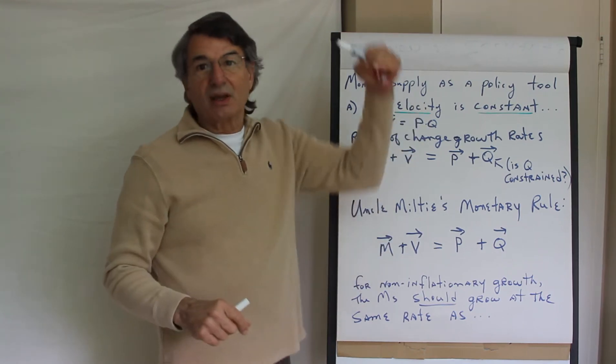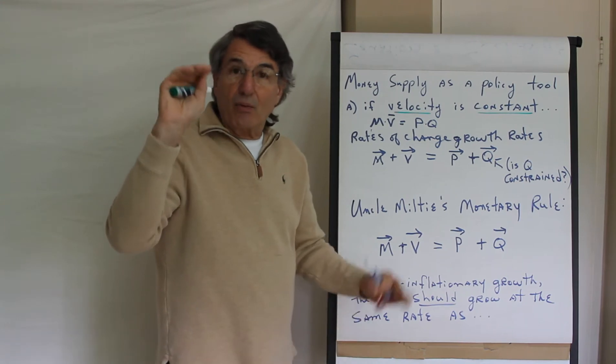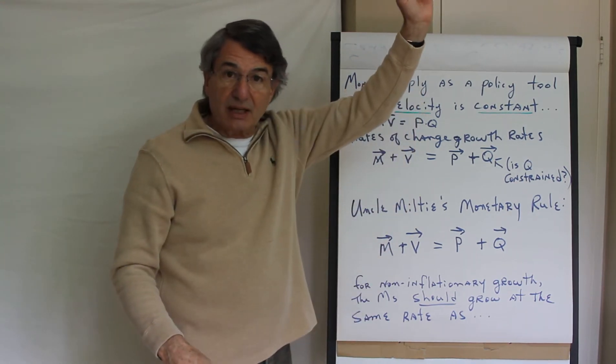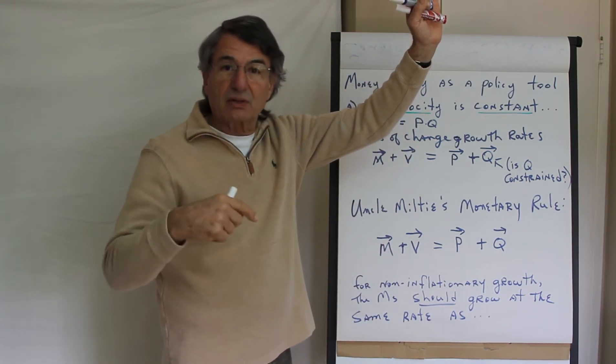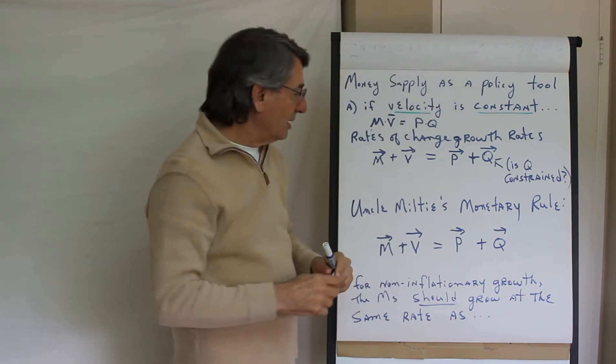The point is that when money demand goes down, velocity goes up. When people are content to hold their money instead of spending it and circulating it, then the velocity of circulation goes down. They are just inversed to each other.